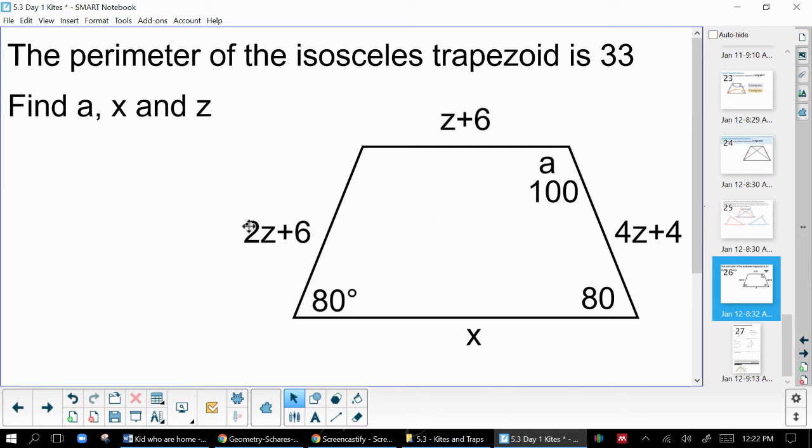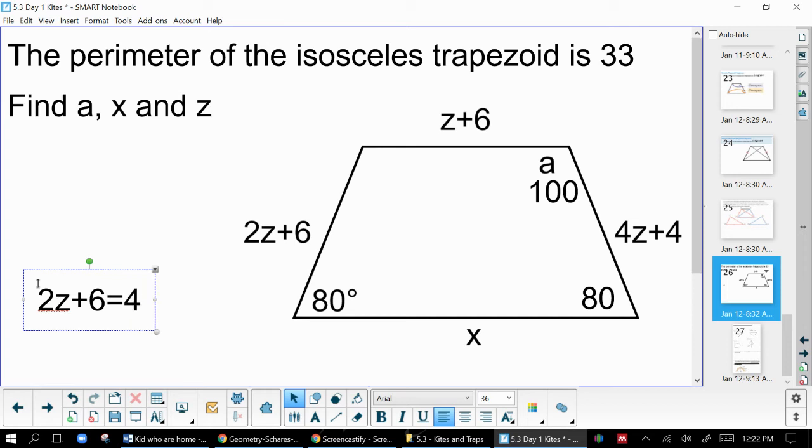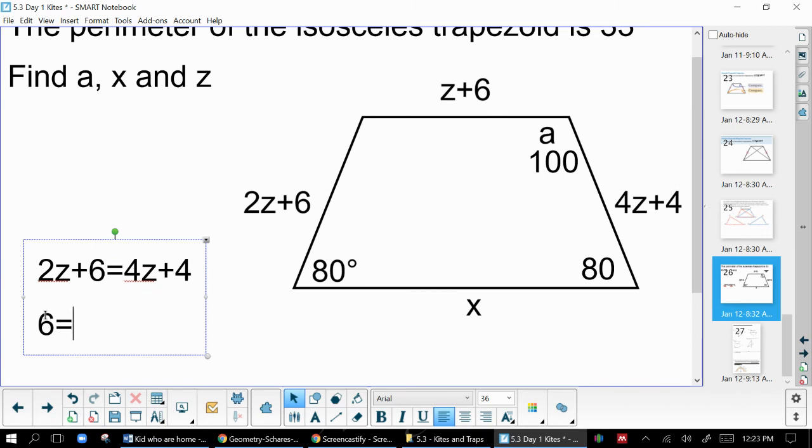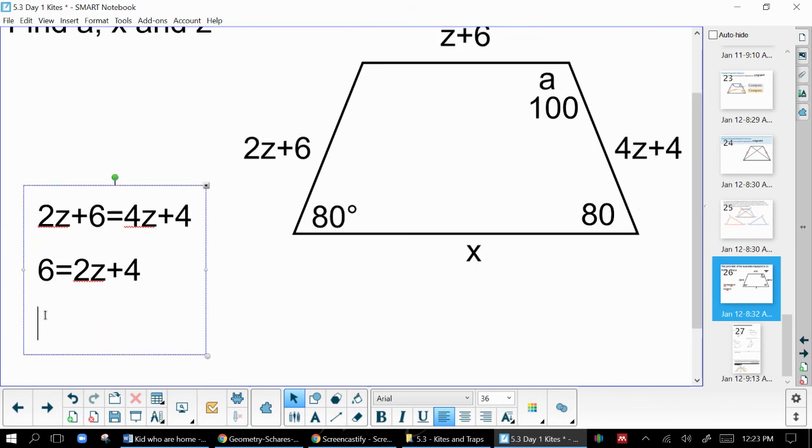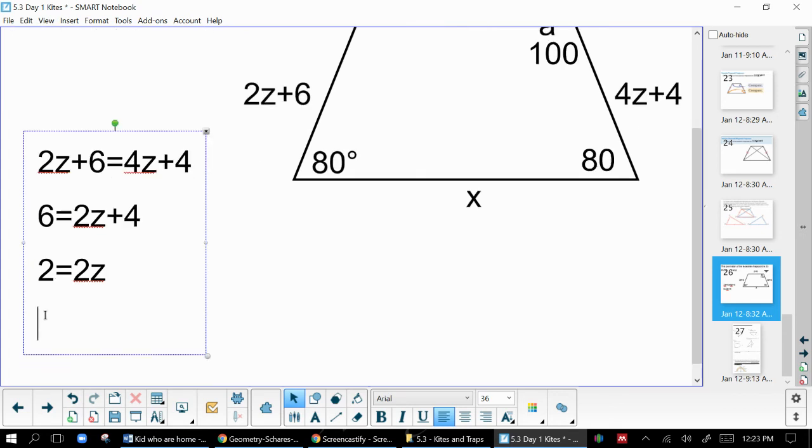Next thing I might do is, well, I know that these two sides are equal, so I can write an equation. 2Z plus 6 equals 4Z plus 4. I know those are equal, and I can solve that equation. So what I might want to do is subtract 2Z from both sides, and then subtract 4 from both sides, and then I can divide by 2. And so I get that Z is 1.